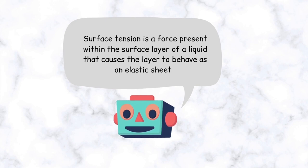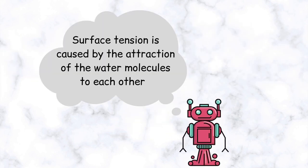Surface tension is a force present within the surface layer of a liquid that causes the layer to behave as an elastic sheet. It's caused because of the attraction of the water molecules to each other.